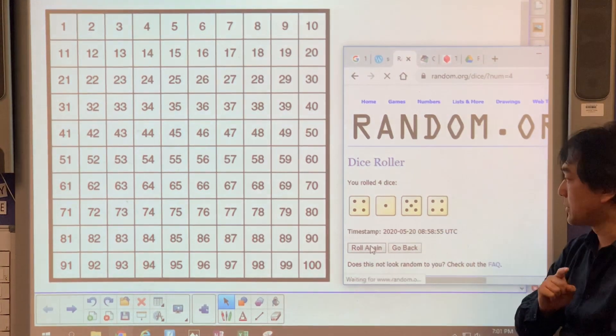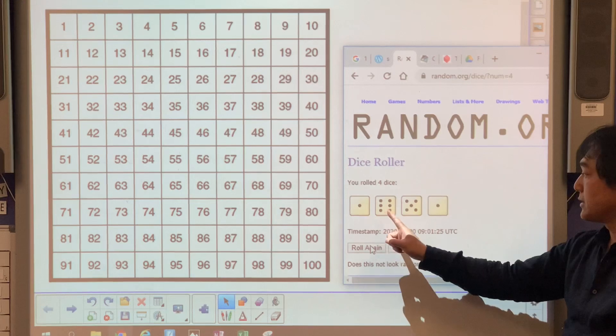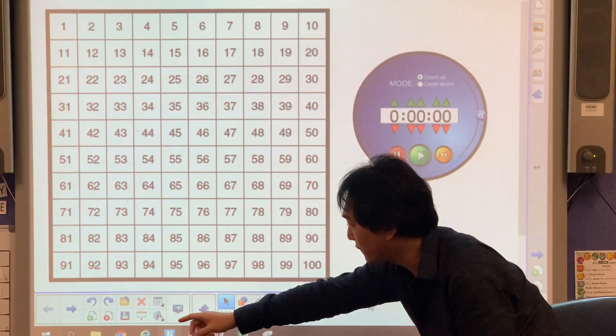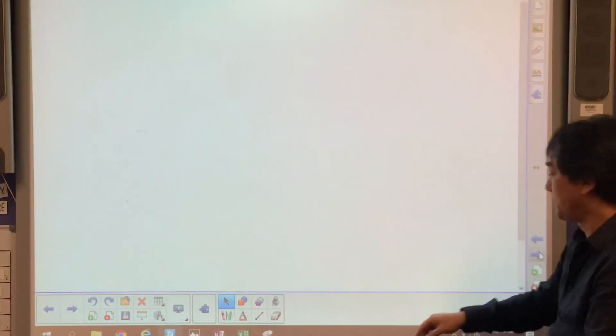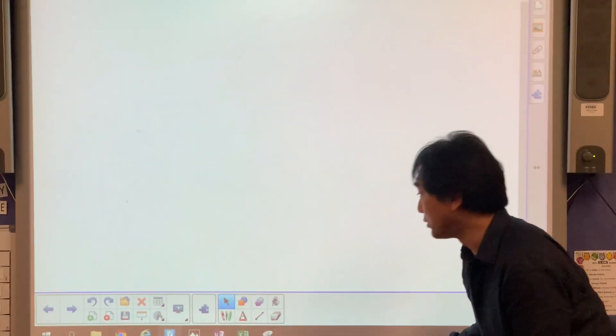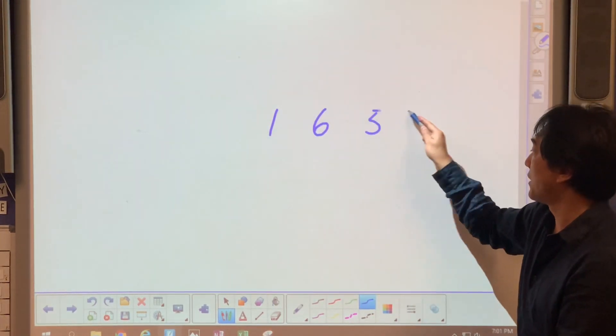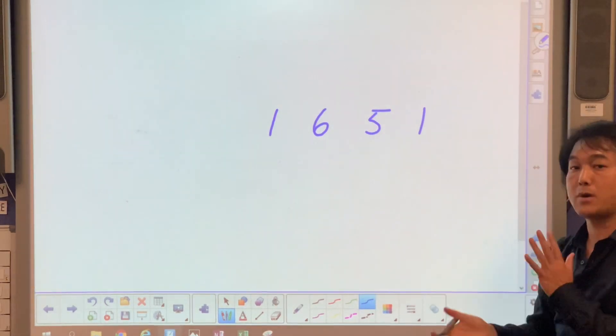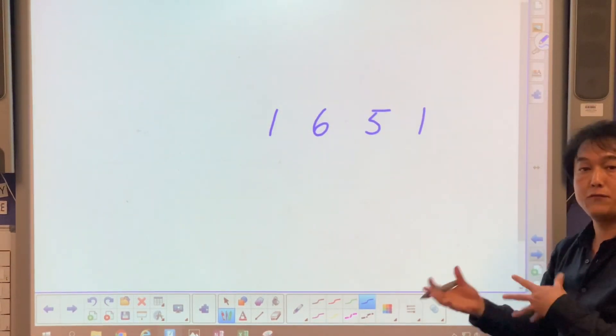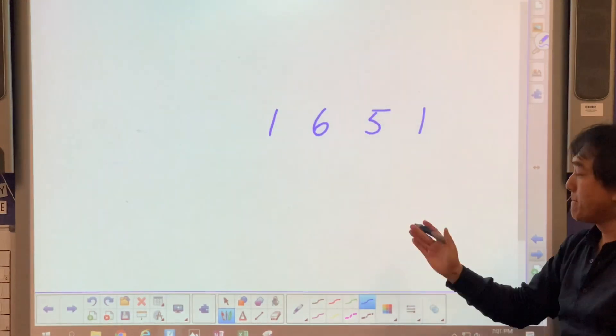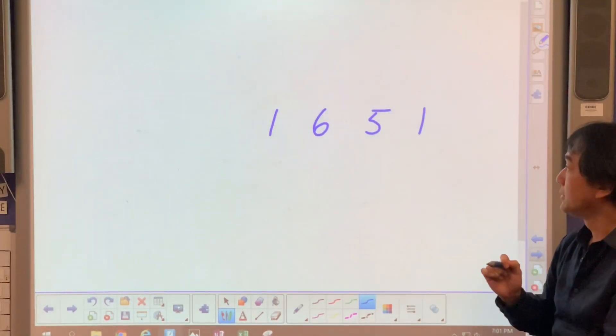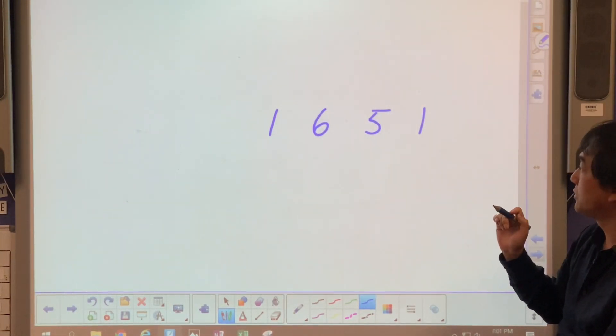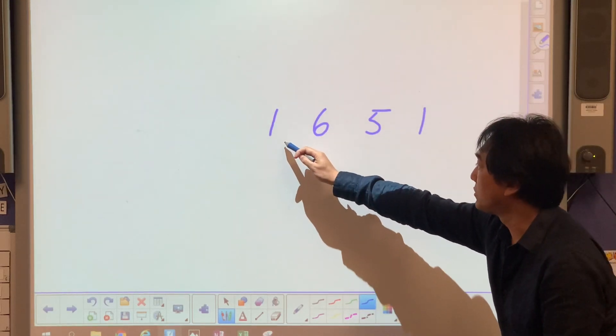I'm going to roll my dice first: one, six, five, one. I quickly record one, six, five, one. I'm going to use these four numbers using plus, minus, multiplication, or division to make a number on the hundred chart.